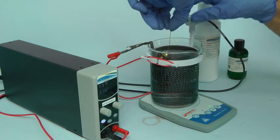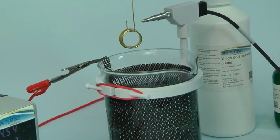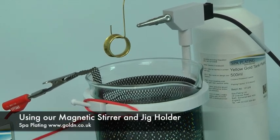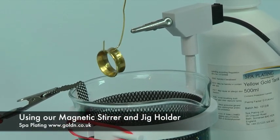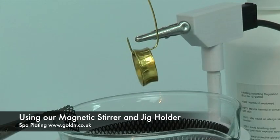For full instructions on how to use the other pieces of equipment in this video, please see our spa plating YouTube channel, our plating calculators, and electroplating guides. Links to all of these can be found on our website at www.golden.co.uk.